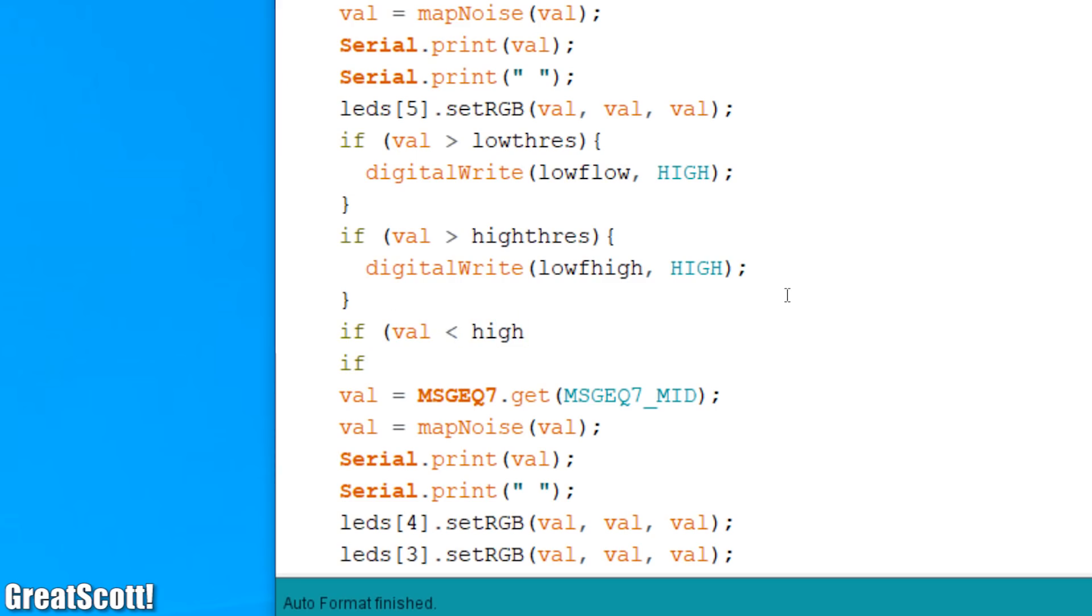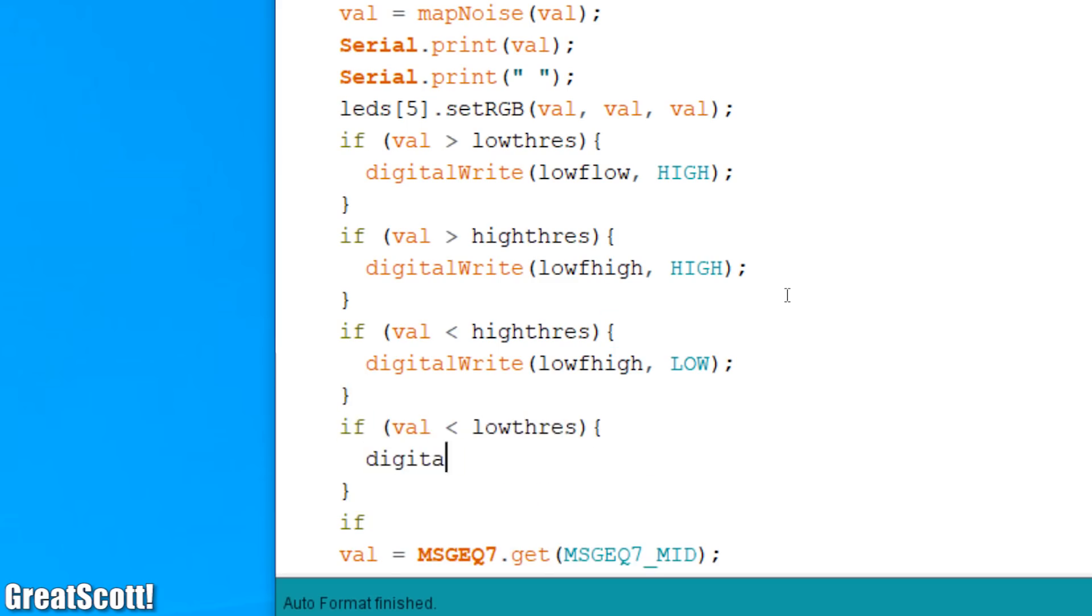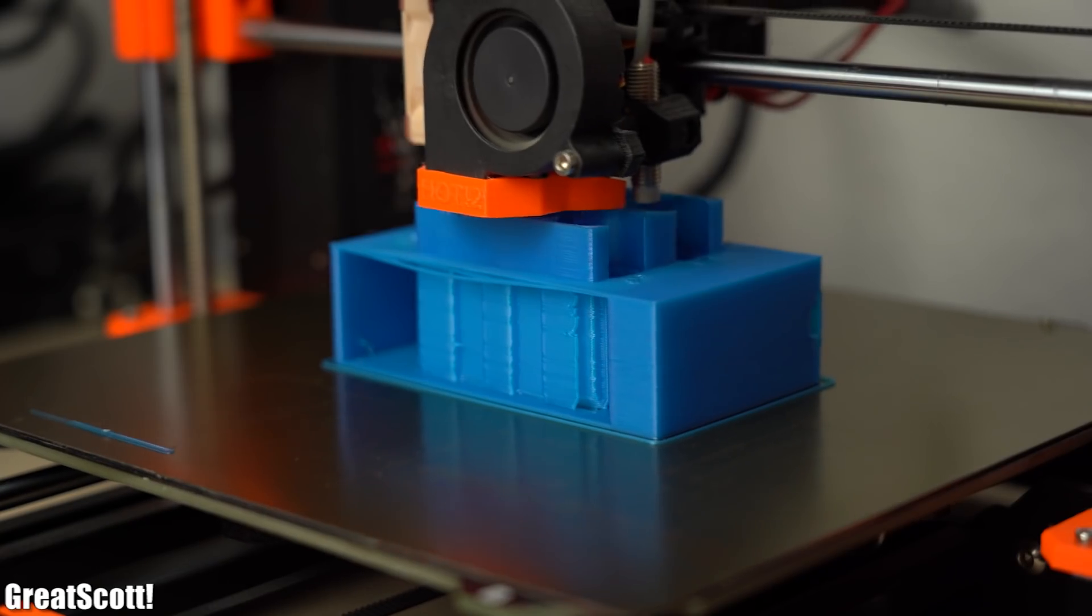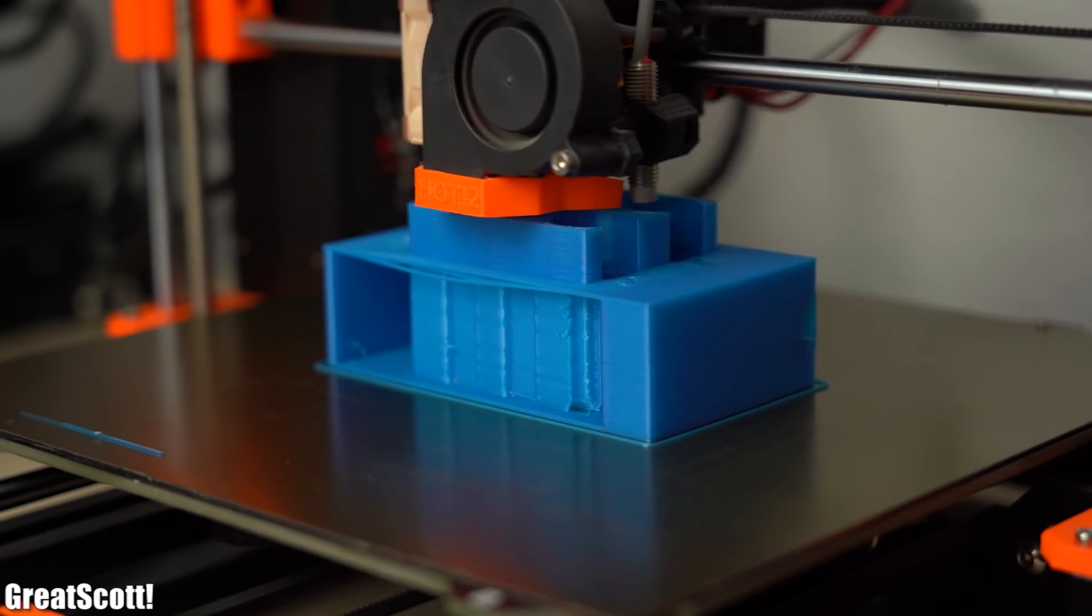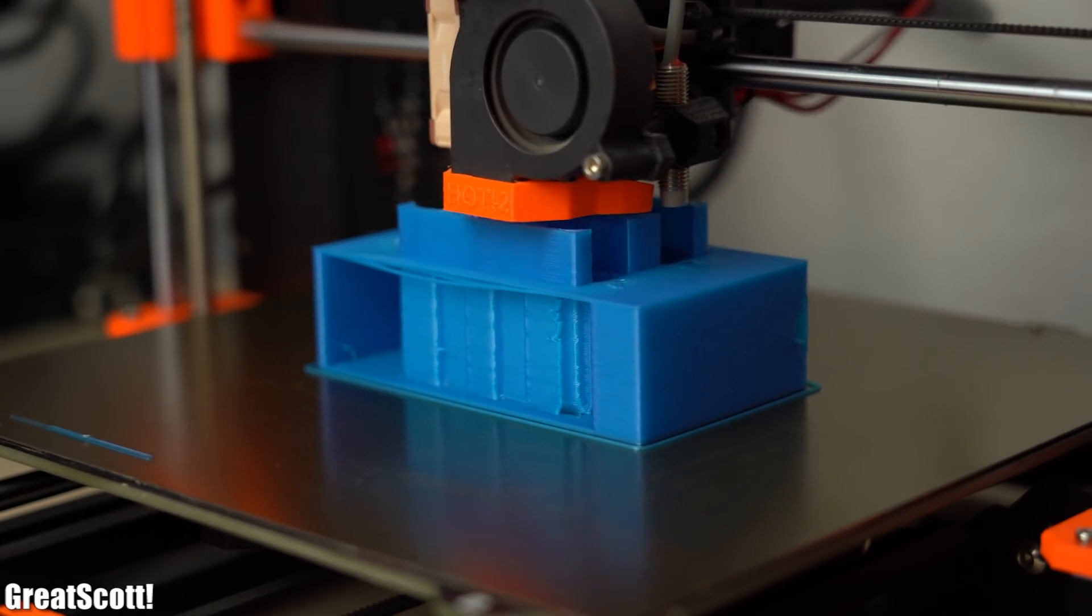Last thing to add to the code was to turn on the MOSFETs depending on whether the frequency values are above or below a low and high threshold value. And with that being completed I turned over to my 3D prints and noticed that I probably should have used some more support material.